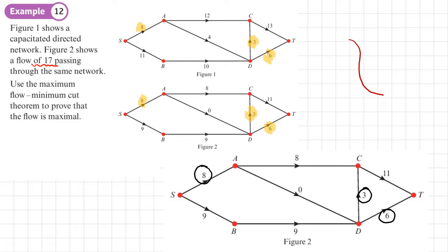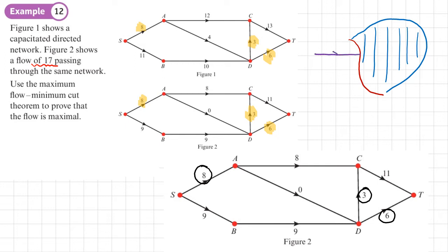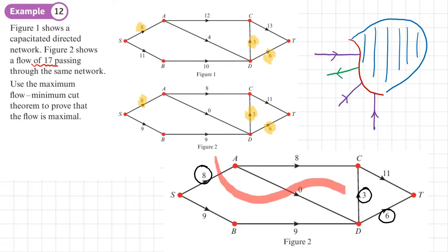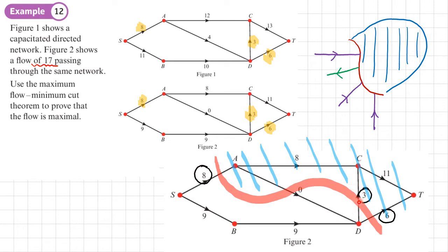There's a complication: one arc has a flow of zero but is not saturated. Recall from our earlier work on cuts — think of pipes being cut with a puddle on one side. Arcs flowing into the cut contribute to its value. Drawing a cut here, arc SA contributes 8, arc DC contributes 3, and arc DT contributes 6. However, arc AD flows out of the cut.